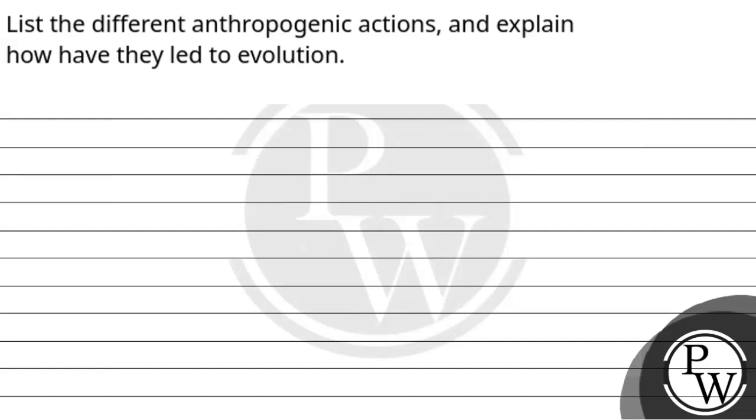Hello, so let's read the question. The question says: list the different anthropogenic actions and explain how they have led to evolution.